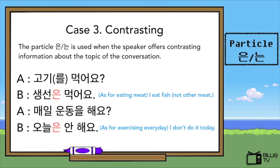The third case is contrasting. The particle 은/는 is used when the speaker offers contrasting information about the topic. For example, if someone asks you whether you eat meat — 고기 먹어요? — and the meat could be beef, pork, chicken, or fish, but you eat only fish, you can say: 생선은 먹어요 — 'I eat fish, not other meat.' Another example: if someone asks if you exercise every day — 매일 운동을 해요 — but you want to say you are not exercising today, you say: 오늘은 안 해요. This implies you usually work out, but something happened today.